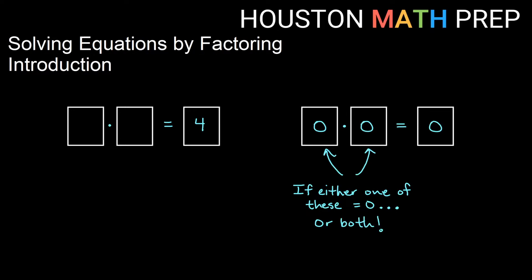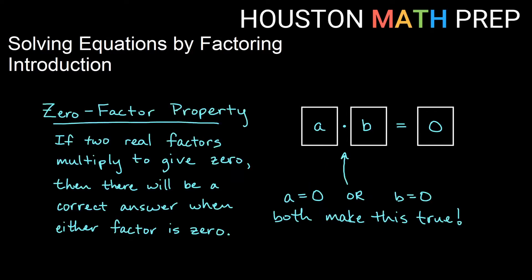That's not true with the other case with a number like four — one of the boxes doesn't necessarily need to be any one specific number. We can do lots of different things with four, but with zero, that's a specific thing, and we call that the zero factor property.